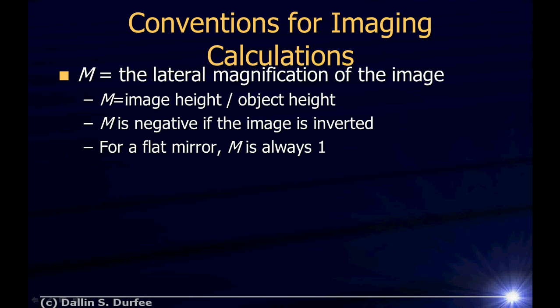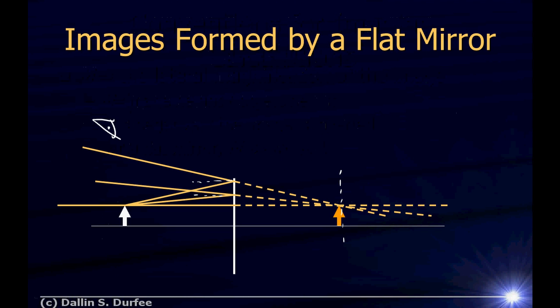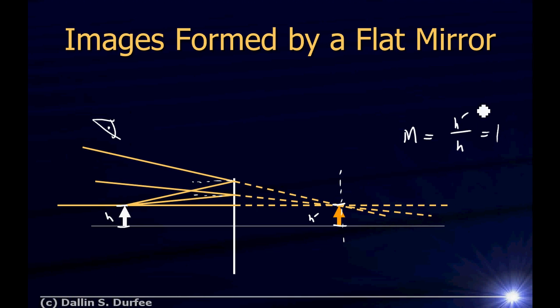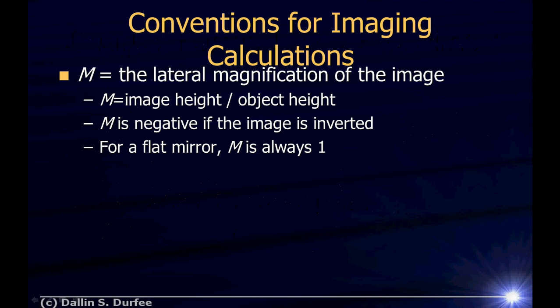We have the lateral magnification M, which is just the image height divided by the object height. If M is negative, the image is inverted. For a flat mirror, M is always 1. The height of my object is H, the height of my image is H prime, and the magnification is H prime over H. If the image is bigger than the object, magnification is greater than 1. If the image is upside down, M will be negative.